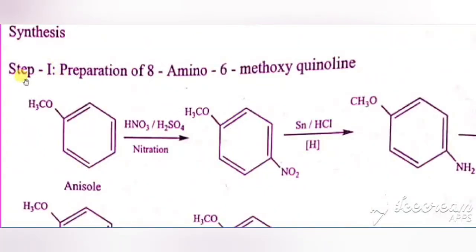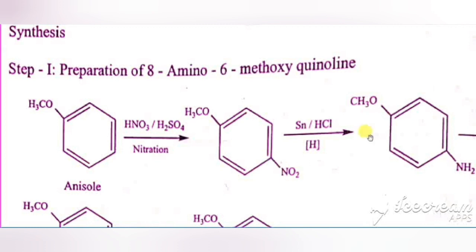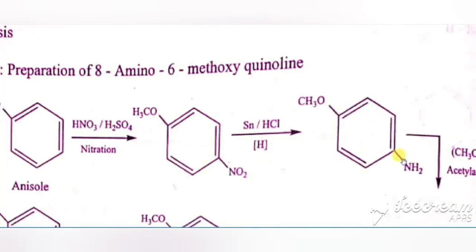Now we will see the synthesis of pamaquine — there are 3 steps. Step 1 is preparation of 8-amino-6-methoxyquinoline. Starting material is anisole — benzene ring with OCH3. Anisole undergoes nitration by nitric acid and sulfuric acid, adding a nitro group at the para position. On reduction using tin and HCl, the nitro group is converted to an amino group.